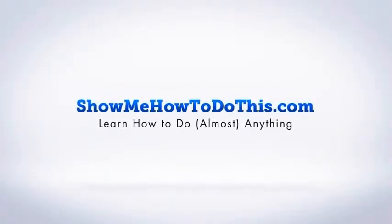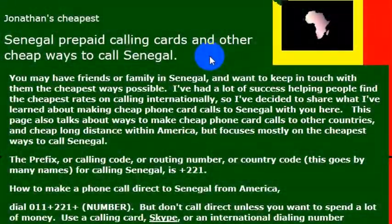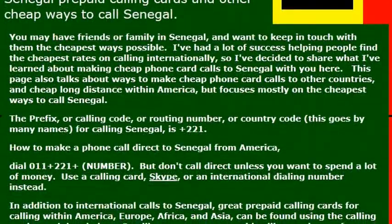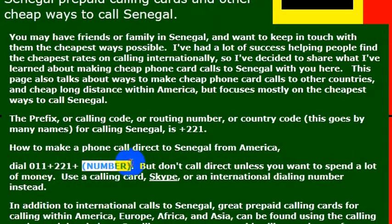To reach Senegal, if you are trying to make a phone call there, if you're flying there you need to take an airplane obviously. But if you're just trying to make a phone call to Senegal, what you would do is know the country code, which is 221, and if you're calling from the United States, you would dial 011, then the country code of 221, and then the phone number you're trying to reach.